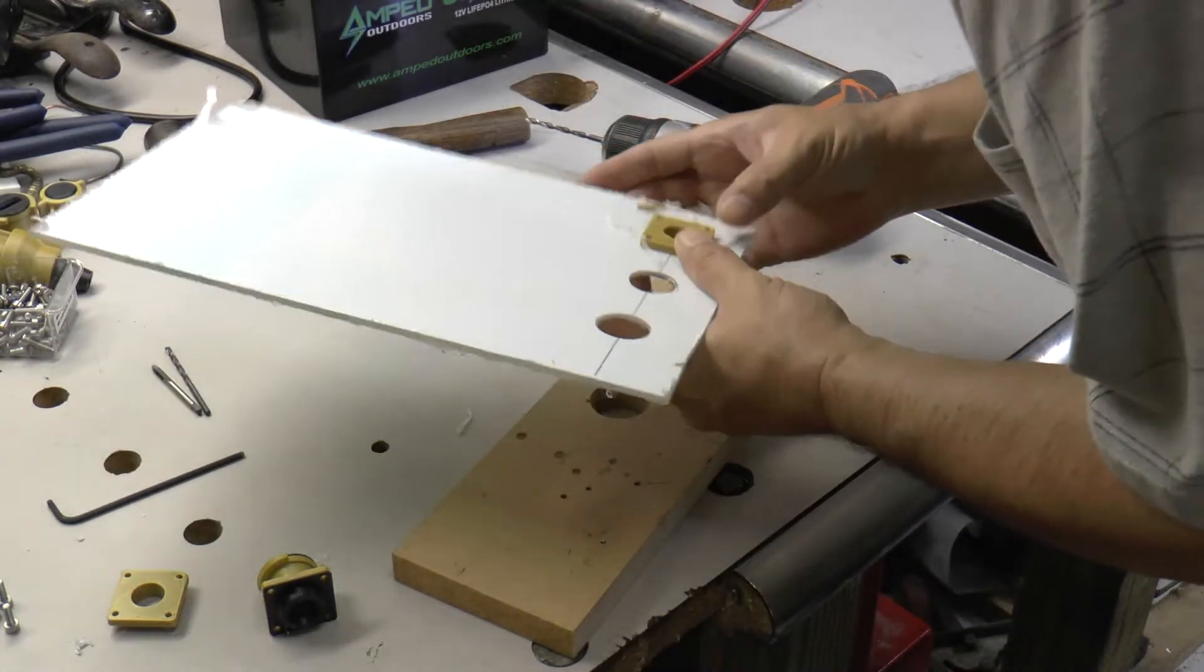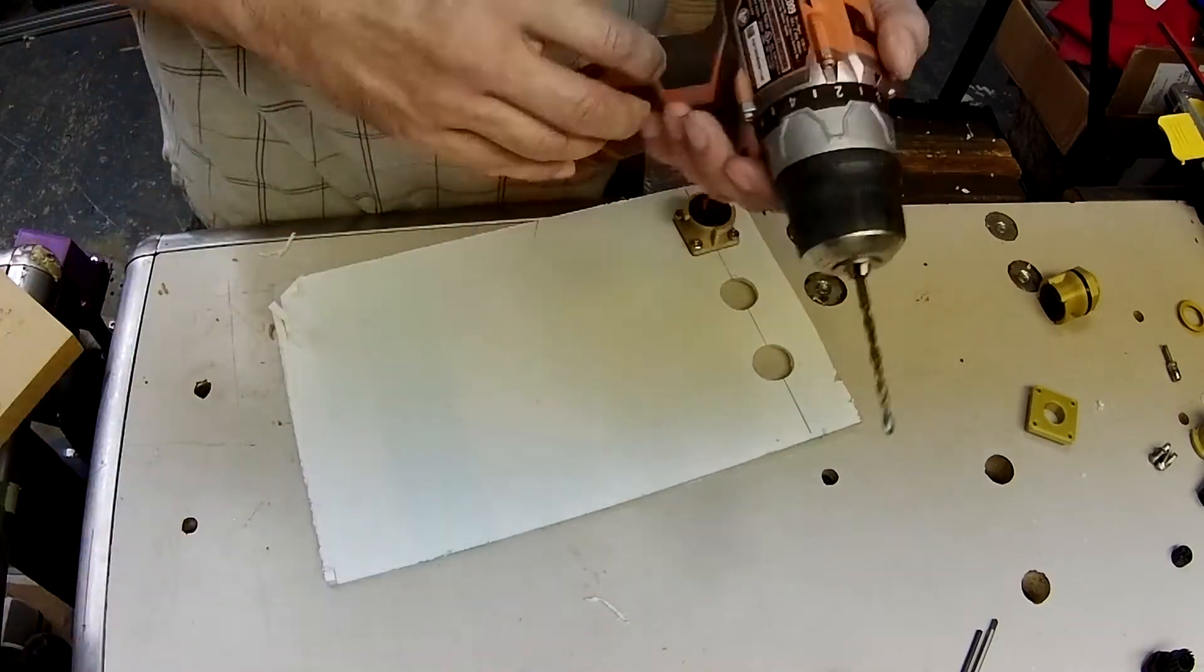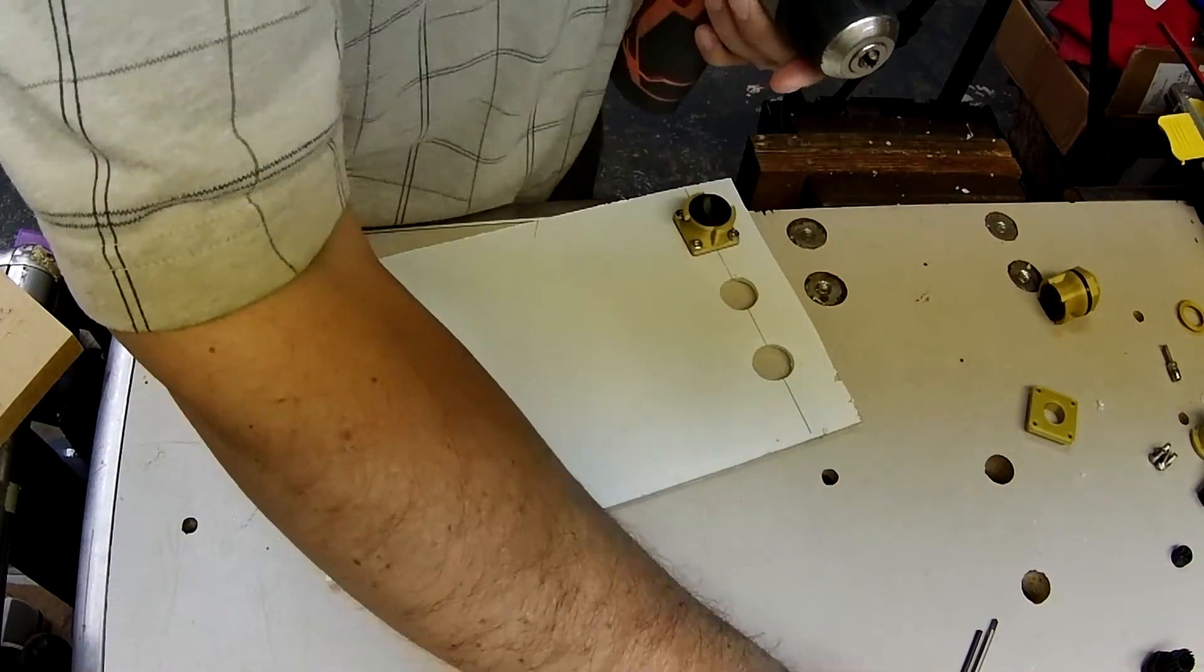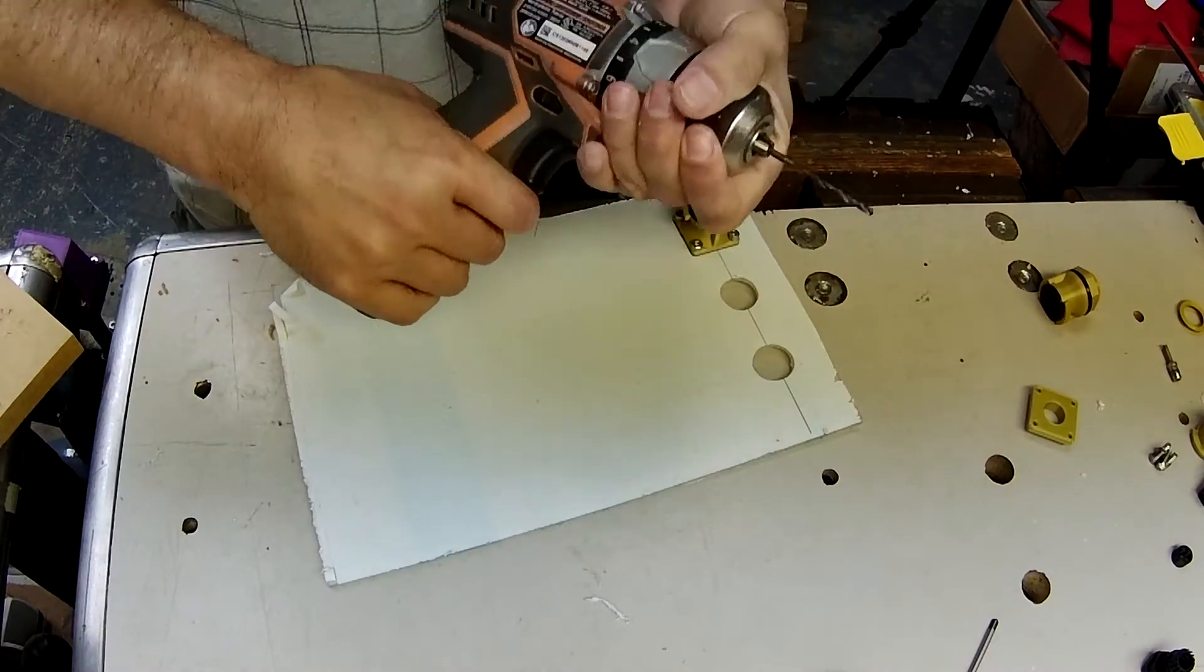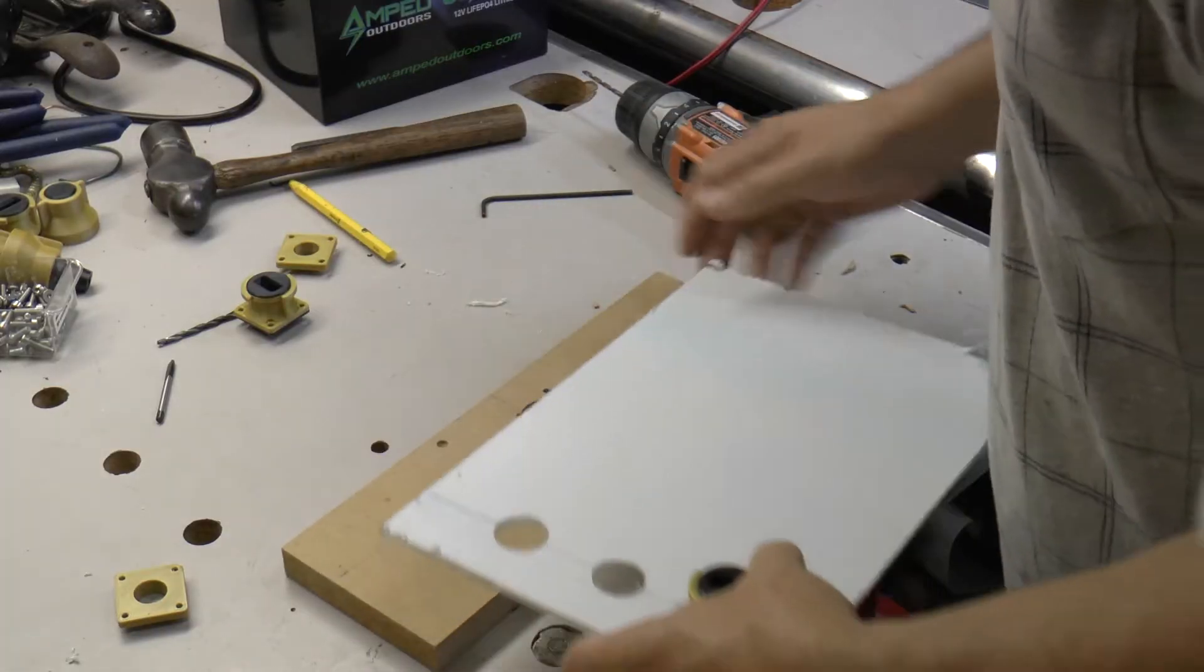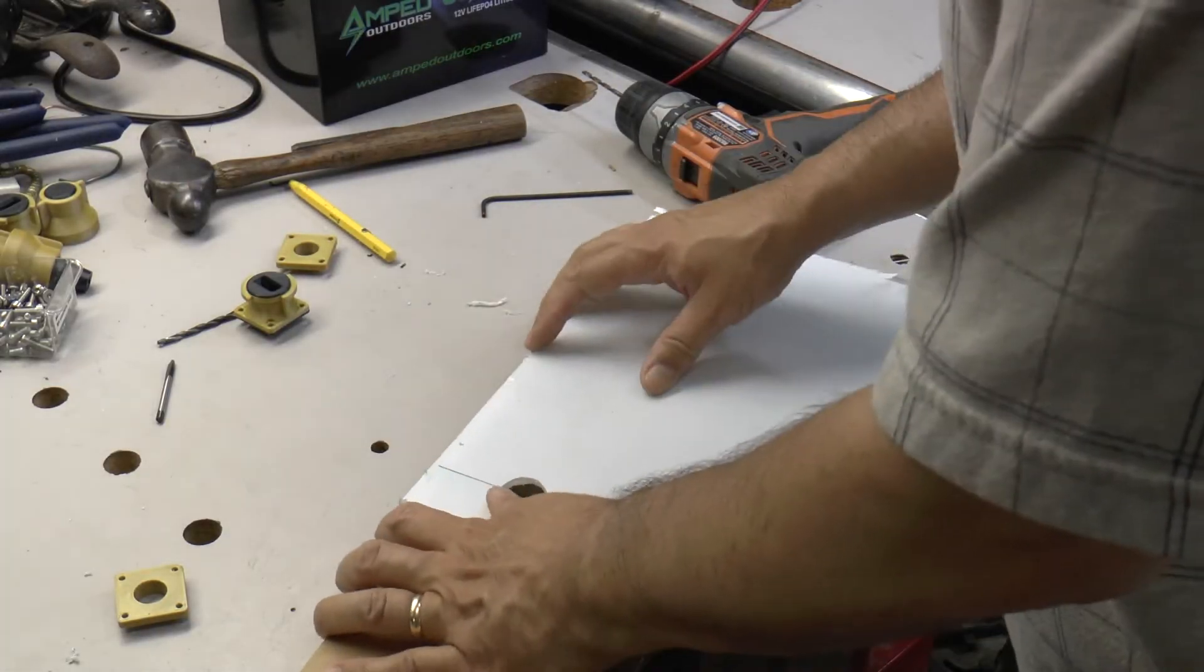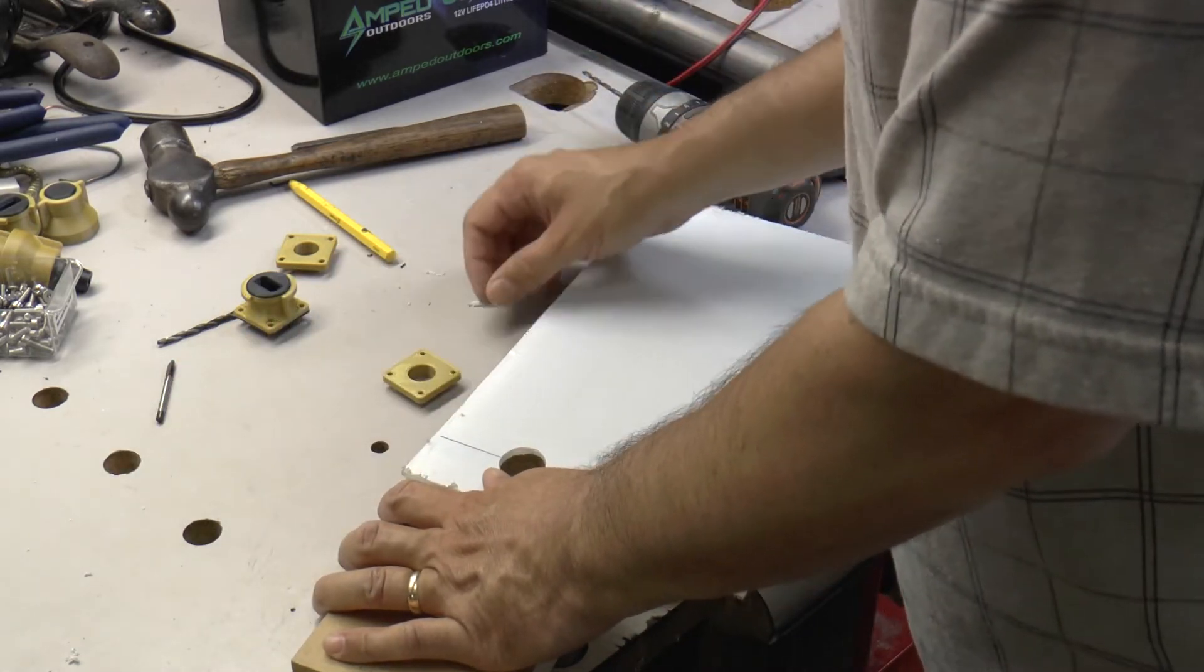So we're going to do the same thing, except that this time we're going to use a tap drill, which is smaller. And when we do this one, we won't be able to put a screw in to lock it in place. So I'm going to have to hold it.